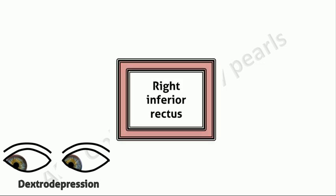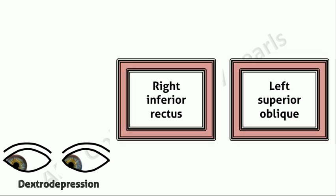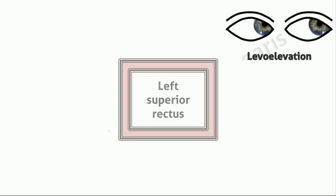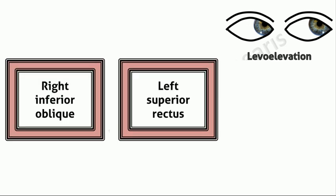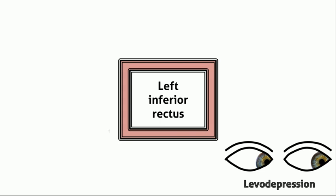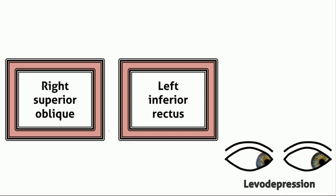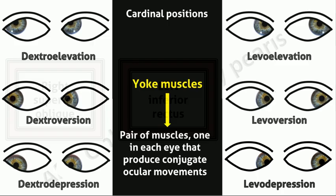By a similar argument, the right inferior rectus and the left superior oblique are the yoke muscles for dextro depression. In levo elevation, the left eye is abducted and the right eye is adducted, so the left superior rectus and the right inferior oblique are the yoke muscles. In levo depression, the left inferior rectus causes the depression in abduction, the right superior oblique causes the depression in adduction, and so these two are the yoke muscles for this position.